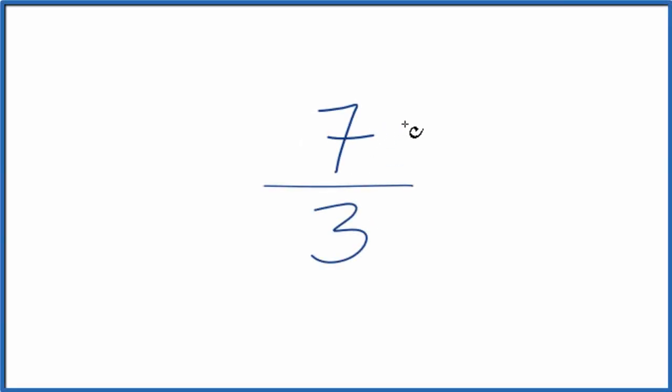If you're asked to simplify the fraction 7 thirds, here's how you do it. We want to find another fraction that's equivalent, it's equal to 7 over 3, it's just that it's in lowest terms. We've simplified it.